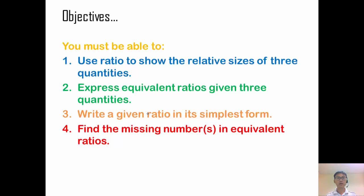So at the end of today, I hope you are able to understand or able to use ratio to show the relative sizes of three quantities. Able to express the equivalent ratios. And from there, able to find the ratio in simplest form. And given an equivalent ratio to find the missing number. And also one more objective is to actually learn about repeated identity. Take care!